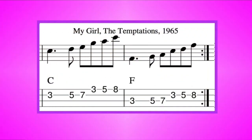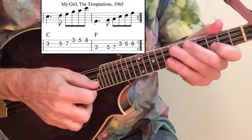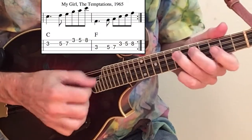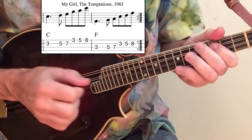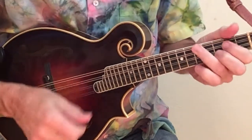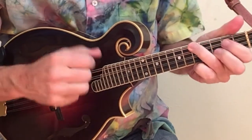No collection of 60s music would be complete without a song from The Temptations. Strum C and F chords after you play the opening theme. One, two, three, four. I've got sunshine on a cloudy day.